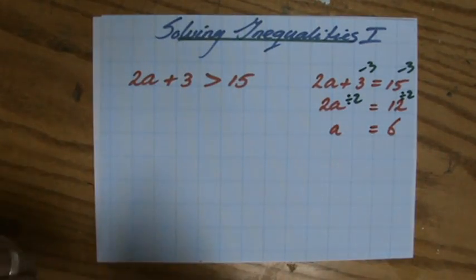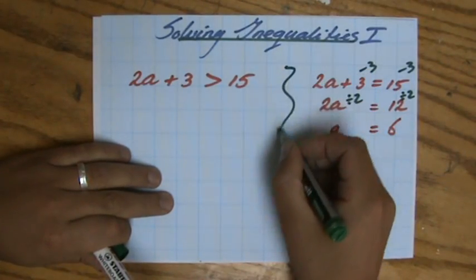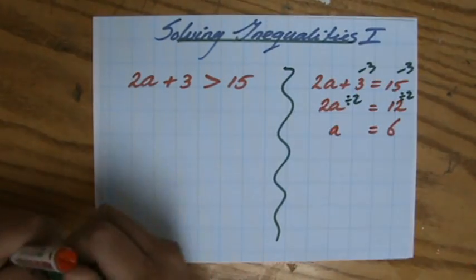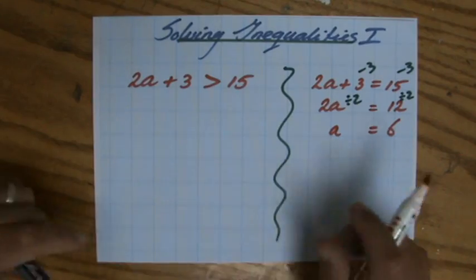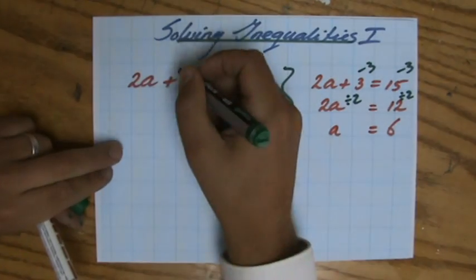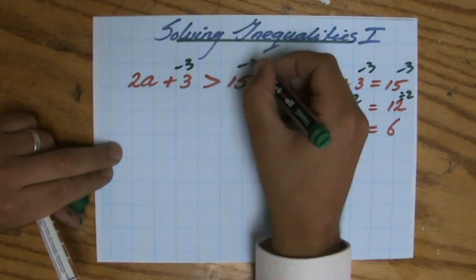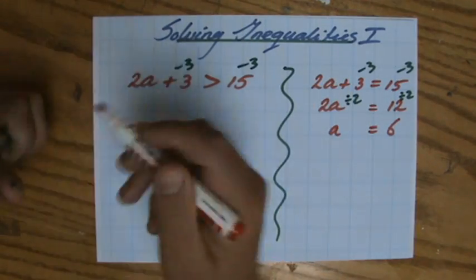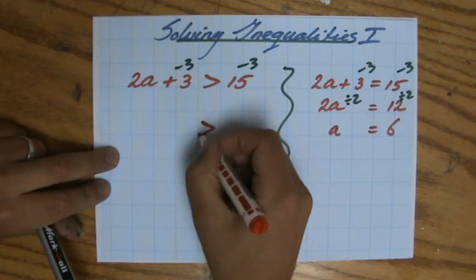But now an inequality. Well guys, you do exactly the same. You do the same as if it was an equality, an equation. So first I'm going to take away 3 on both sides. On the left side to get rid of it. But you have to do that on both sides of the, in this case, inequality sign.